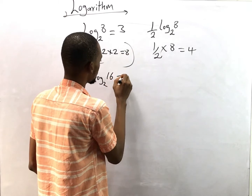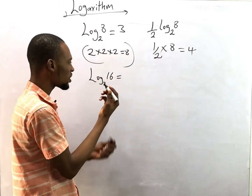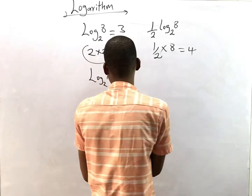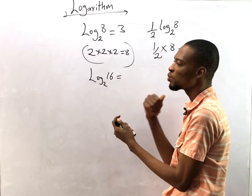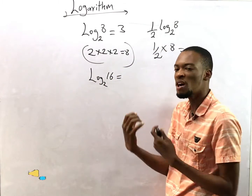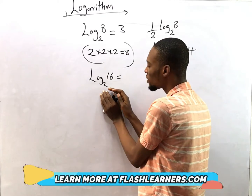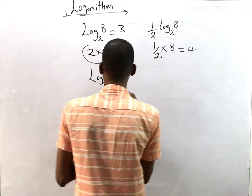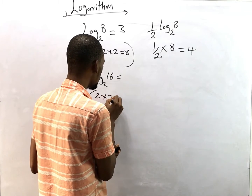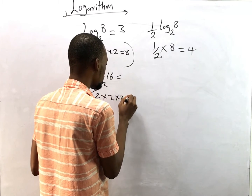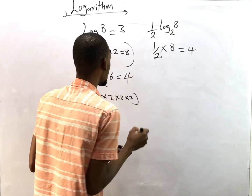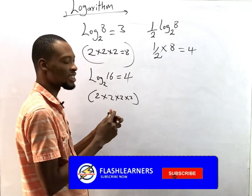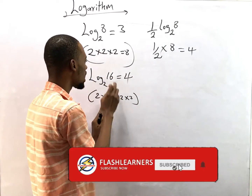Now let's look at log 16 with base 2. This tells us how many times do we multiply 2 to get 16. So: 2 times 2 is 4, times 2 is 8, times 2 is 16. So log 16 with base 2 is 4. This implies that we have to multiply 2 four times to get 16.